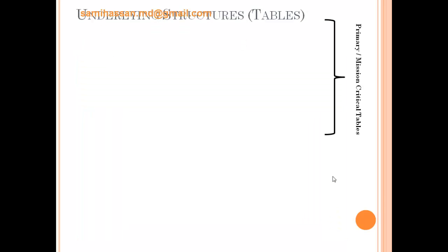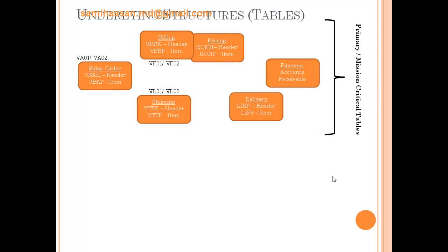Let's have a look at the primary or mission-critical tables. For sales order creation, users use T-codes VA01, VA02, and so on — this function writes data to tables such as VBAK and VBAP. The billing function via T-codes VF01 and VF02 writes to tables VBRK and VBRP. Similarly, the shipping function using T-codes VL01 and VL02 writes to tables VTTK and VTTP, and so on.